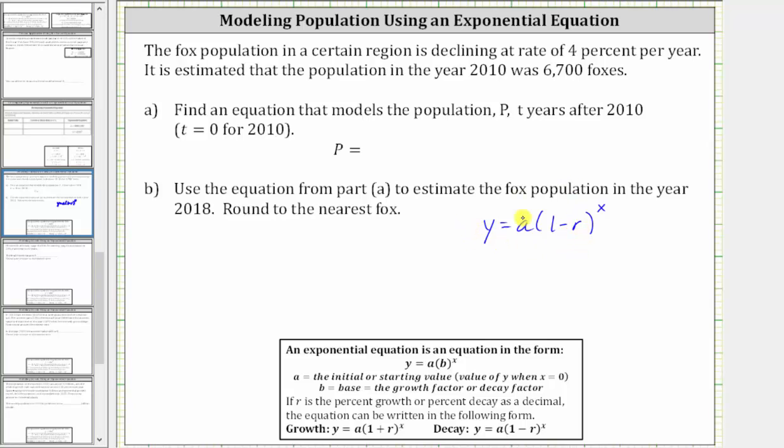a is the initial value, which means a is equal to 6,700. And r, the decay rate, is 4%, and 4% as a decimal is equal to 0.04.